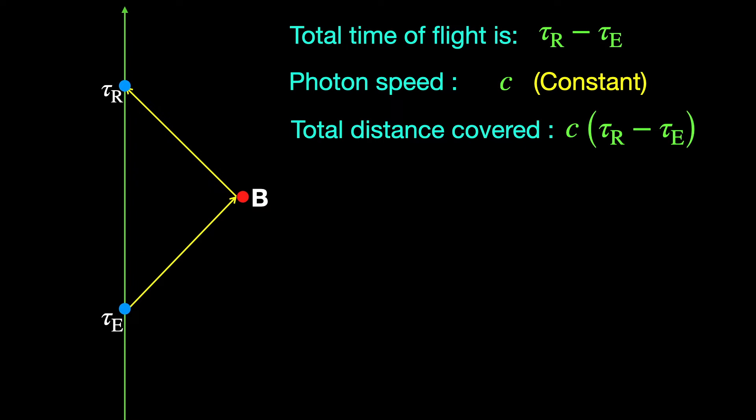and half of it must be the spatial distance between the observer and the event. If you are thinking, but the photon did not go back to where it came from in the picture, think again.